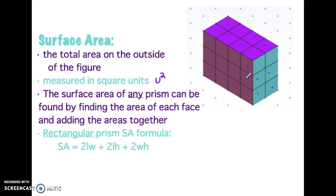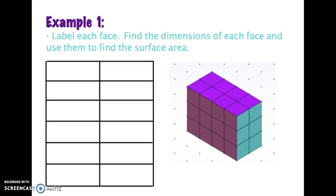The surface area of any prism can be found by finding the area of each face and then adding those areas up together. The rectangular prism surface area formula is surface area equals two times length times width plus two times length times height plus two times width times height. I almost never use that formula because I find it very cumbersome, so I like to think about what's happening and find the area of each face. We're going to go ahead and find the surface area of that rectangular prism.